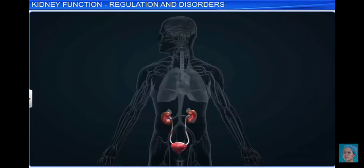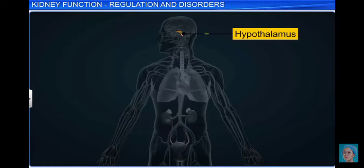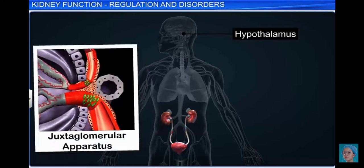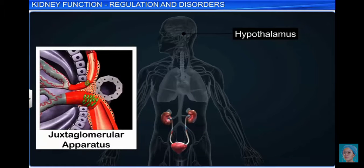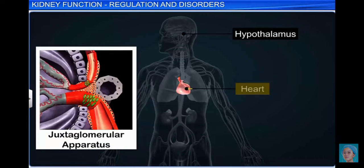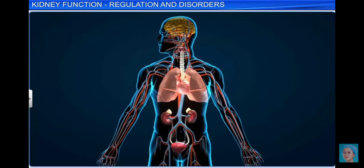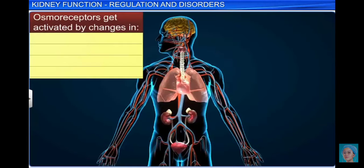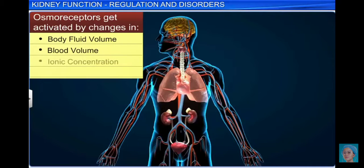Many functions are monitored and regulated by the hormonal feedback mechanisms of the hypothalamus, juxtaglomerular apparatus or JGA, and heart. Our body has several osmoreceptors that are activated by changes in the volume of body fluids, volume of blood, and ionic concentration.